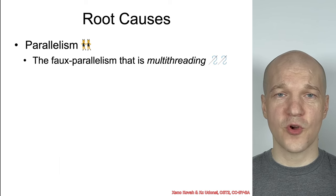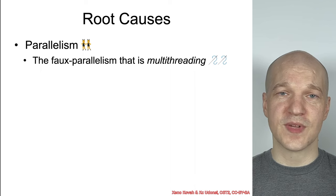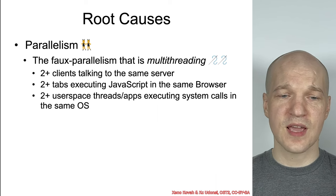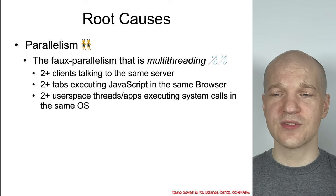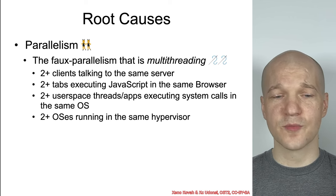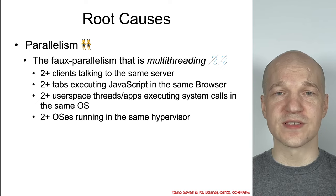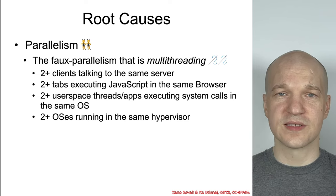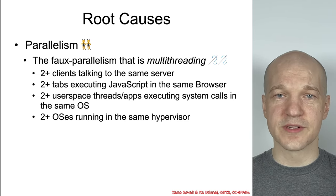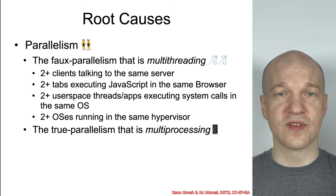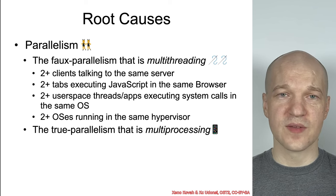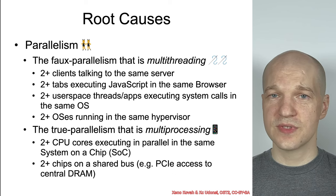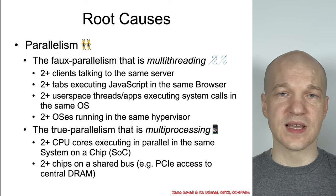Parallelism can be faux or fake parallelism, which is multi-threading — two clients talking to the same server, two tabs executing JavaScript in the same browser, two user-space threads executing system calls in the same OS on a single CPU, two operating systems running in the same hypervisor. This is context switching, flopping back and forth with no true parallelism. Then of course you have true parallelism with multi-processing — multiple CPUs, such as two CPU cores inside the same system-on-a-chip, or two separate chips accessing a shared bus like PCIe.